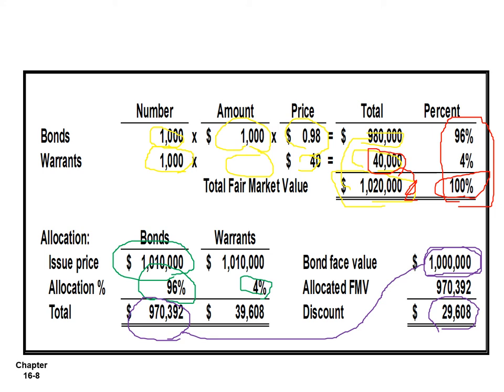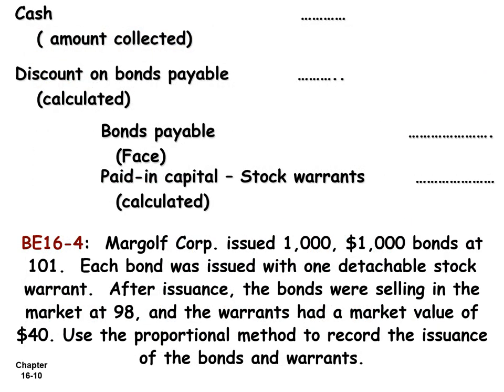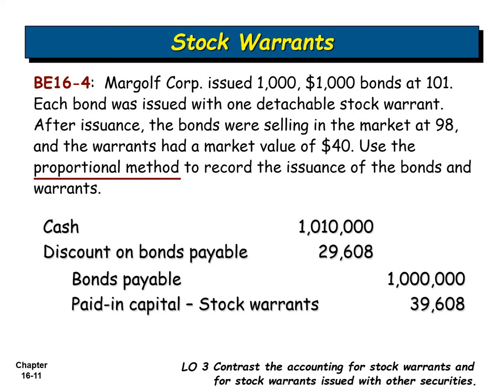With these four figures, we prepare the journal entry. Cash collected is $1,010,000. The discount on bonds is $29,608. Bonds payable at face value is $1,000,000. Stock warrants as paid-in capital is $39,608. These amounts balance to form the complete entry for the issuance of bonds with attached stock warrants.